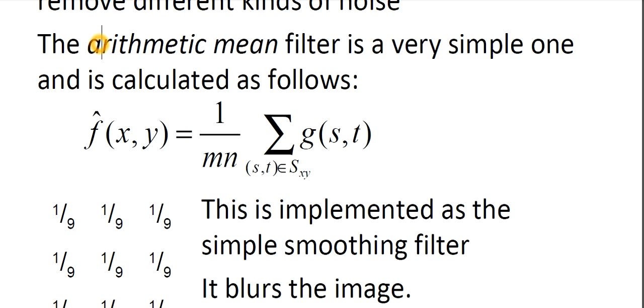It deals with the arithmetic mean. We are calculating the arithmetic mean. mn stands for the dimension of the image. That's why this is known as arithmetic mean filter, and as it is very easy to calculate, this is a simple one and it will blur the image. About the next filters, we will discuss in the next lecture.